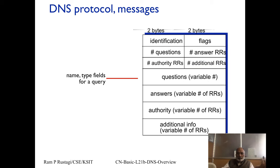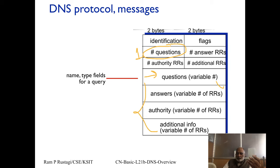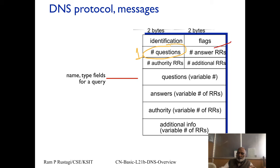In a query, the question section contains the name — for example ksit.edu.in — and the query type such as A. Answer records are absent from queries but present in responses. If there are 4 IP addresses, the answer record count is 4. If there are 2 authority name servers, there are 2 such records. If there are 6 additional records, there are 6 such entries.